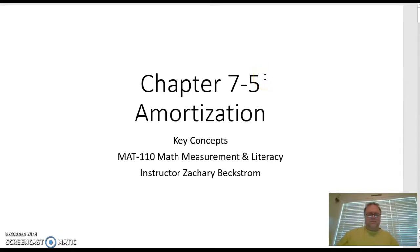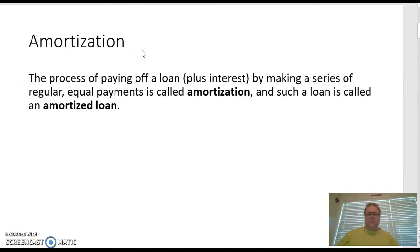Hey everybody, this is Mr. Beckstrom and today we're going to be talking about Chapter 7.5, Amortization. This is a type of loan that's very common that many of us have already used to buy a car, maybe a house, maybe a boat. This is the process of paying off a loan plus interest by making a series of regular equal payments, and it's called amortization or an amortized loan.